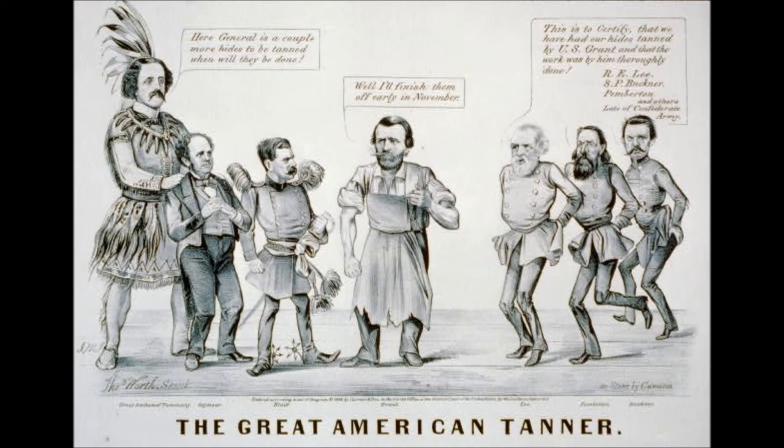Noticing the dialogue boxes above the characters' heads, specifically the box to the far left, it states: 'Here, General, is a couple more hides to be tanned. When will you think they will be done?' As General Grant responds, 'Well, I'll finish them off early in November,' referring to the Union being close to victory.